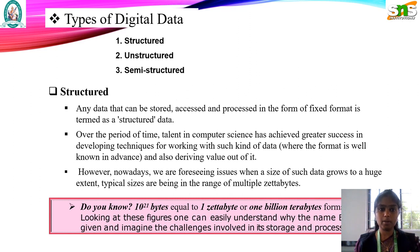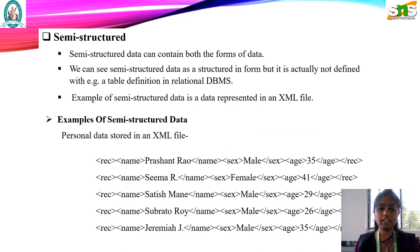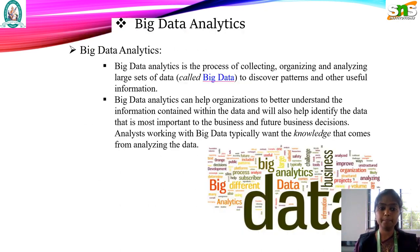Types of digital data: Structured, Unstructured, and Semi-structured. Structured data are formed of a fixed format, and unstructured data are not organized in a fixed format. The semi-structured data can contain both forms of data.